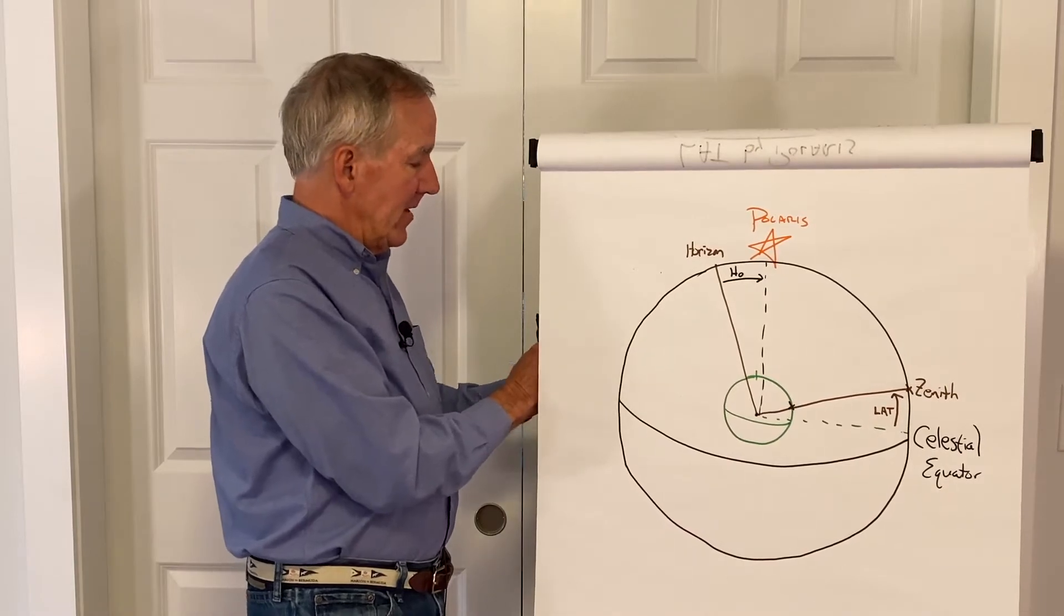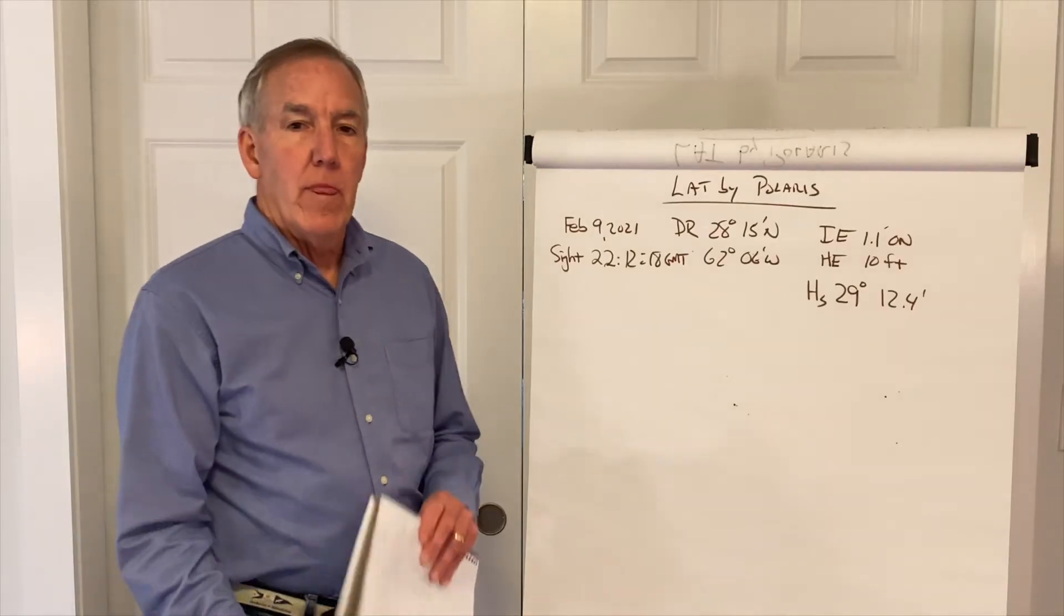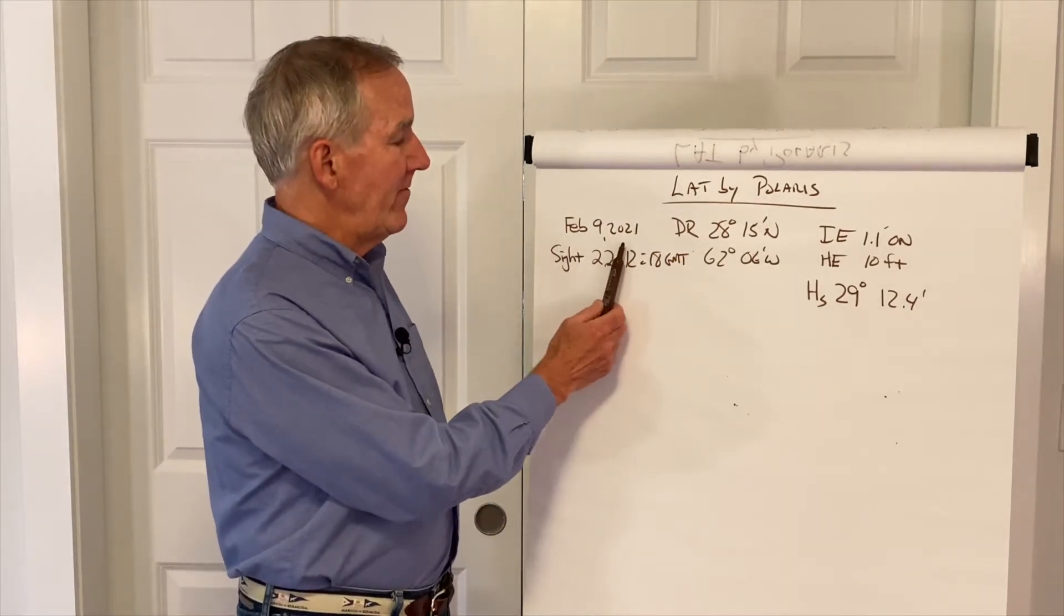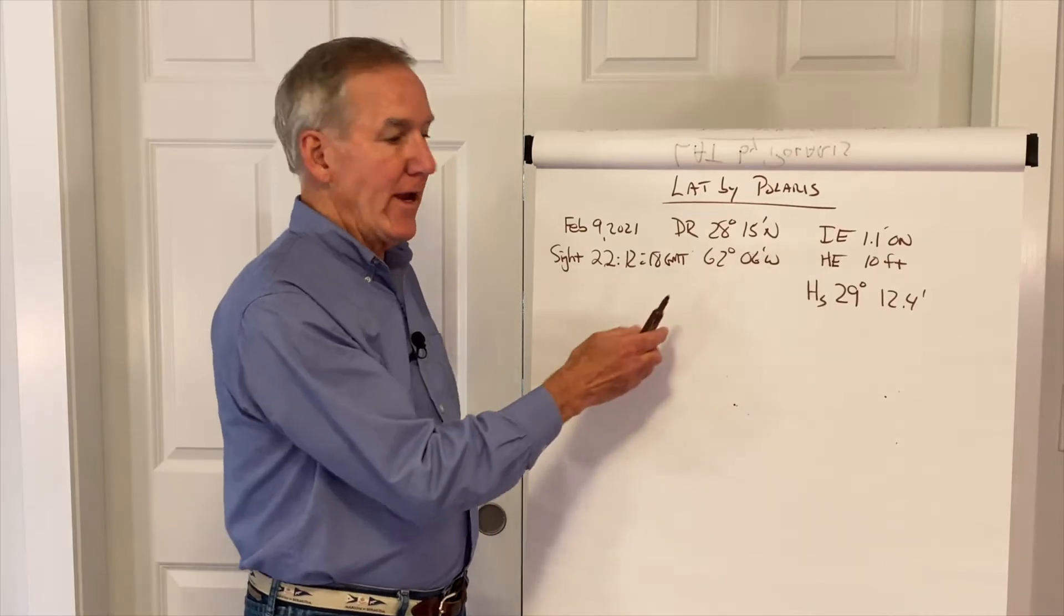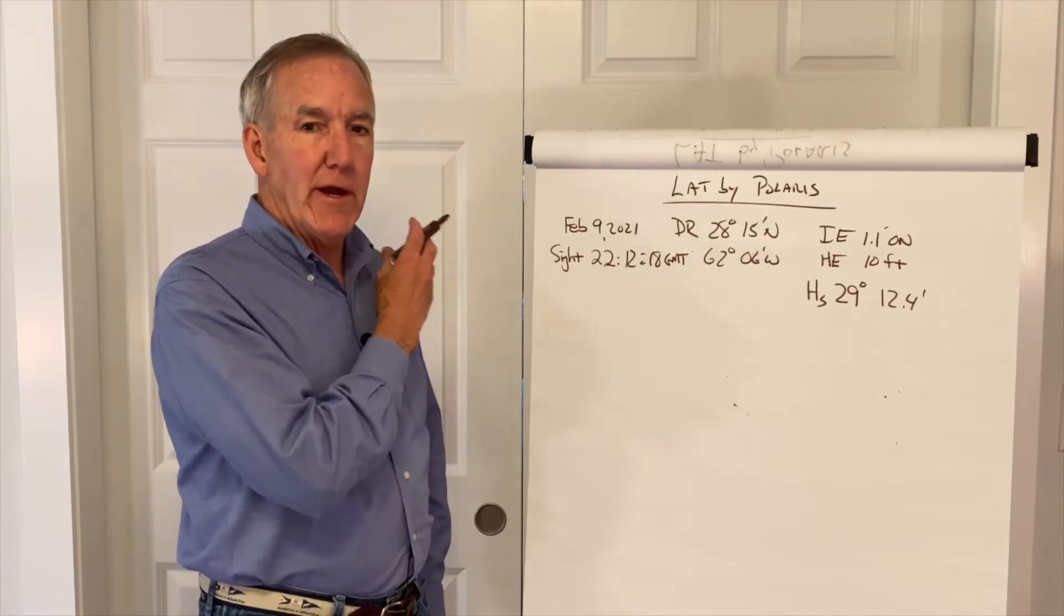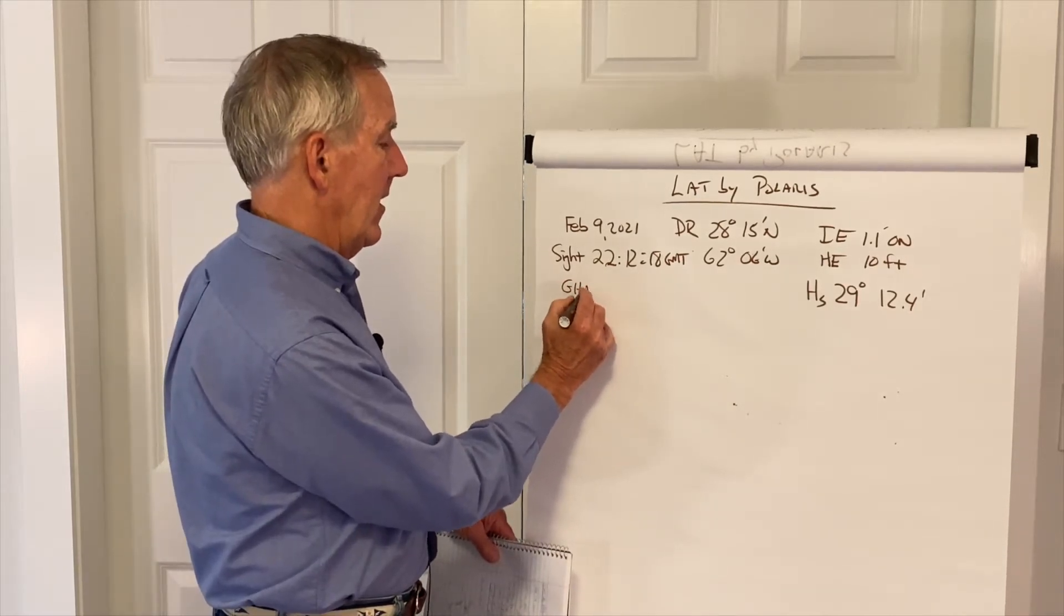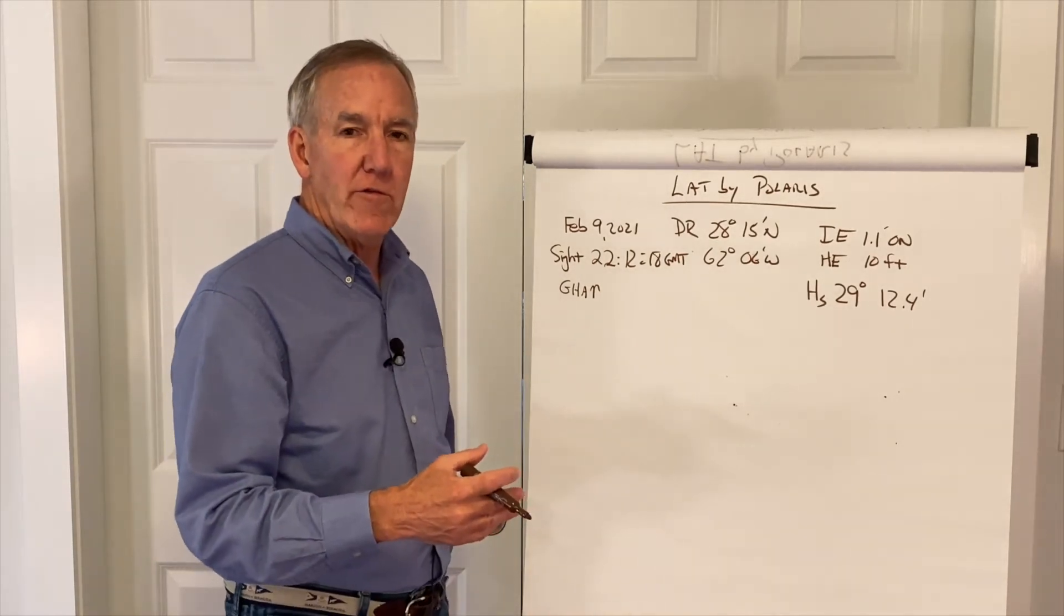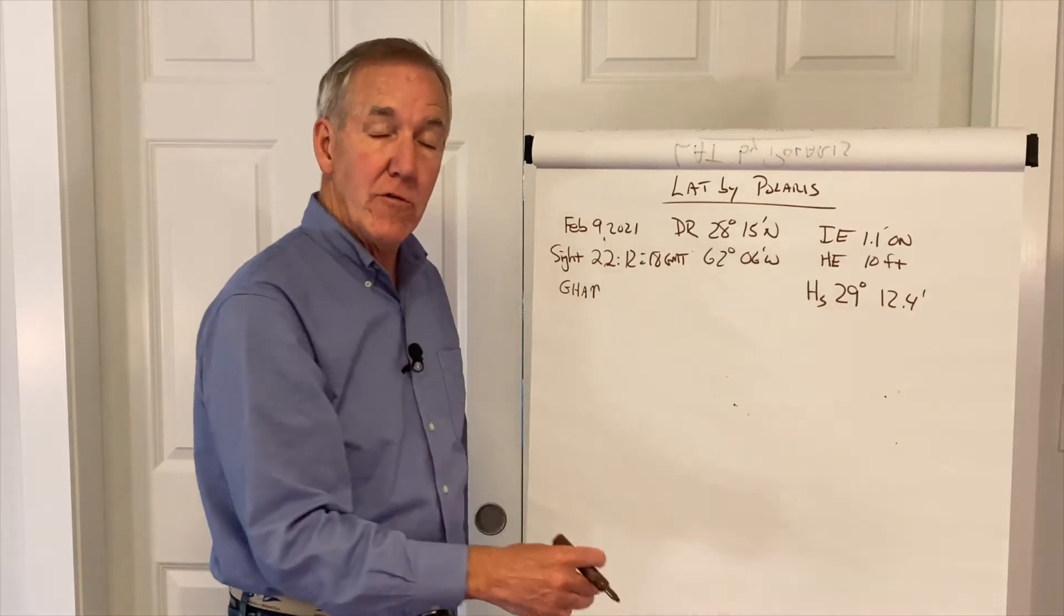So how do we get at this? Well, let's do a problem. Here we've got our information. We've got our date, February 9th, our DR position here, our site information, and then our index error and our height of eye, and the time of the site in Greenwich time. The first thing we have to do with a Polaris site is to get the LHA of Aries. That means getting the GHA of Aries, and then applying our longitude to it to get the LHA.